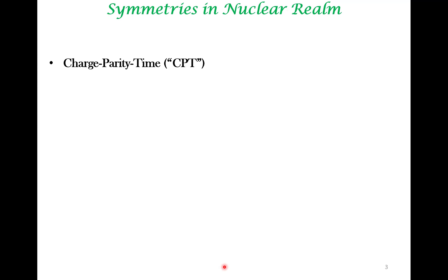In the context of nuclear sciences, there are certain symmetries often referred to as CPT symmetries — charge, parity, and time. What do we mean by charge symmetry? This means that nature treats the positive charge and the negative charge in the same manner. The strength of interaction between positive-positive charges will be the same as between negative-negative charges. So nature does not fundamentally see the difference between a positive charge and a negative charge; both are treated in a similar manner.